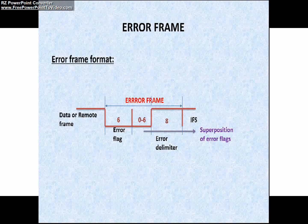The error delimiter consists of 8 recessive bits, you can see here. This allows the bus nodes to restart the bus communications appropriately after an error.